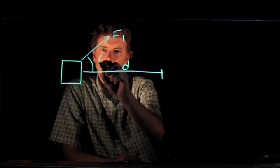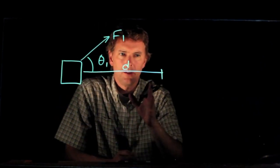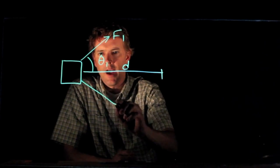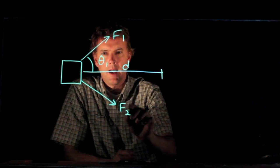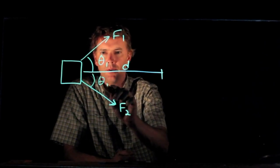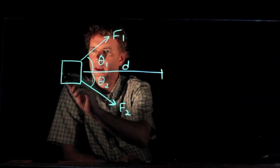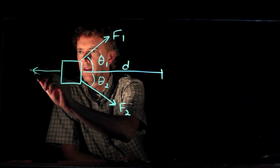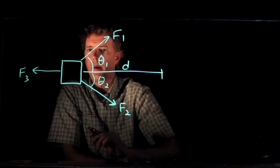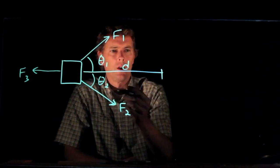F1 at an angle theta 1 with respect to the horizontal. F2 at an angle theta 2 with respect to the horizontal. And then finally F3 directly back along the direction of travel.